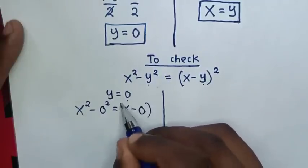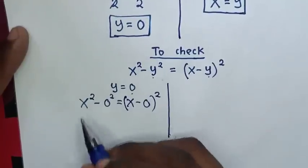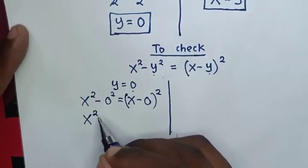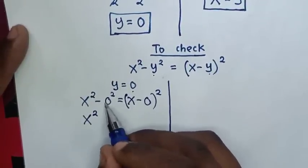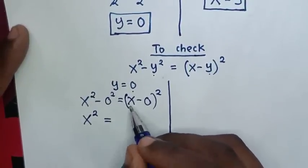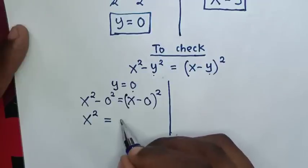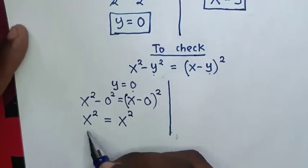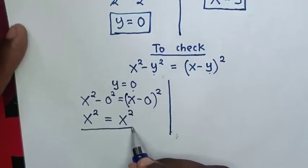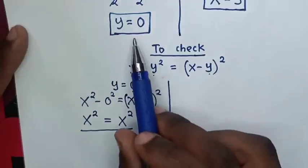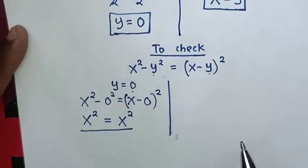So here it will be x squared minus 0, which cancels, equal to x minus 0, which is x, then squared. So left side and right side are equal. It's true for the value of y equal to 0.